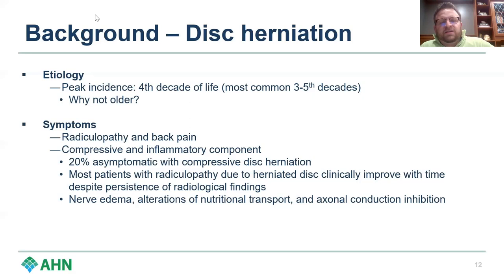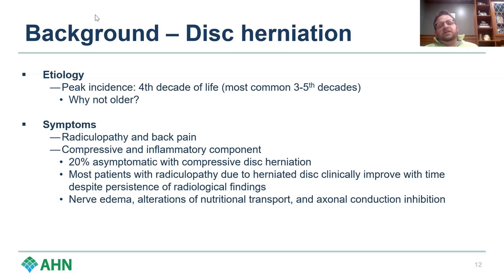The peak incidence of disc herniations occurs during the fourth decade of life, generally somewhere between the third and fifth decades — so in our 20s, 30s, 40s, maybe into our 50s. A good question is why we don't see this in the elderly population. By that point, the disc has often degenerated so much that herniation is unlikely, and arthritis and scarring make it even less probable. So this is predominantly a middle-aged condition.